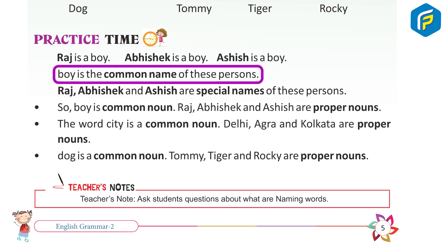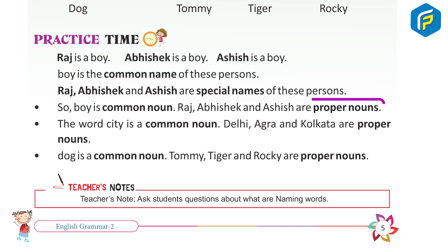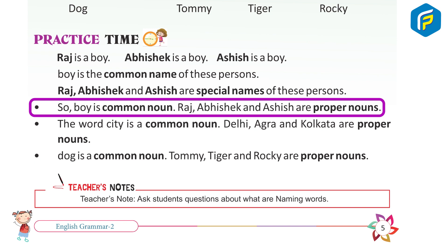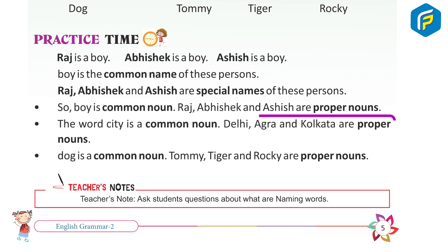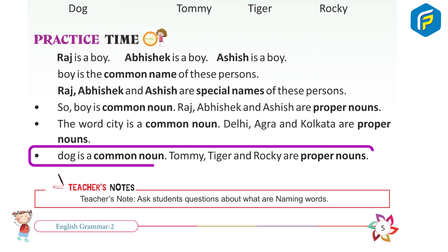Boy is the common name of these persons. Raj, Abhishek and Ashish are special names of these persons, so boy is a common noun and Raj, Abhishek and Ashish are proper nouns. The word city is a common noun; Delhi, Agra and Kolkata are proper nouns. Dog is a common noun; Tommy, Tiger and Rocky are proper nouns.